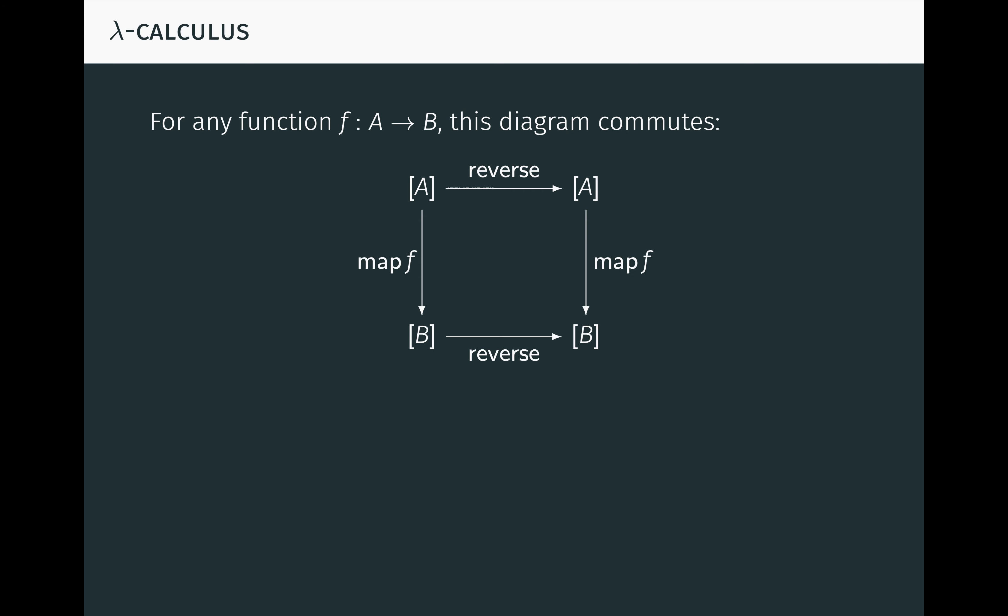The diagram just says that we can either first apply a function to the elements of an input list and then reverse the output list, or first reverse the input list and then apply the function to the elements of that list to obtain the output list. We get the same result either way.